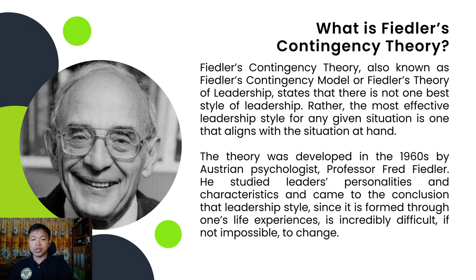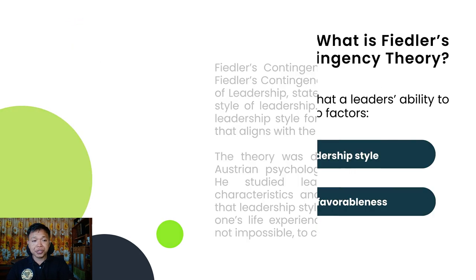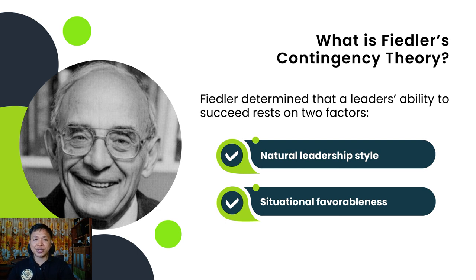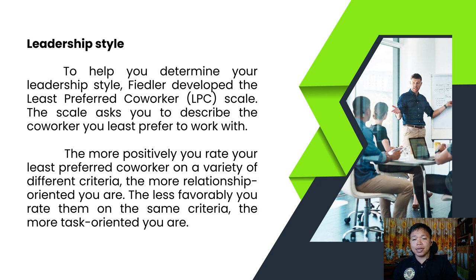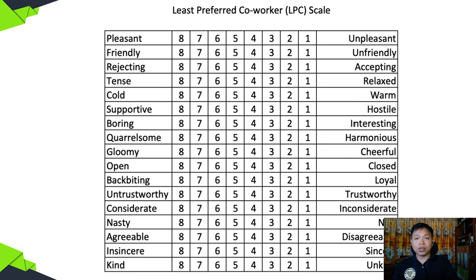In order to best match leaders with situations, each leader must first understand their natural leadership style, then evaluate whether their leadership style is right for the situation. Fiedler determined that a leader's ability to succeed rests on two factors: natural leadership style and situational favorableness. To help determine your leadership style, Fiedler developed the Least Preferred Coworker Scale, or LPC Scale. The scale asks you to describe the coworker you least prefer to work with. The more positively you rate your least preferred coworker on a variety of criteria, the more relationship-oriented you are. The less favorably you rate them, the more task-oriented you are.